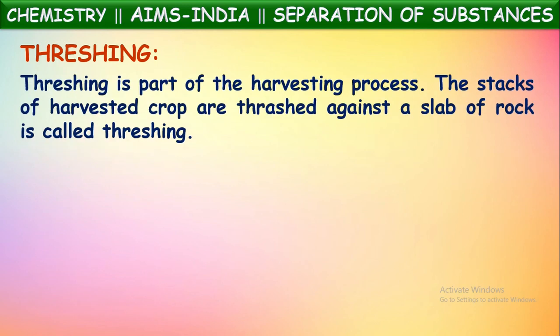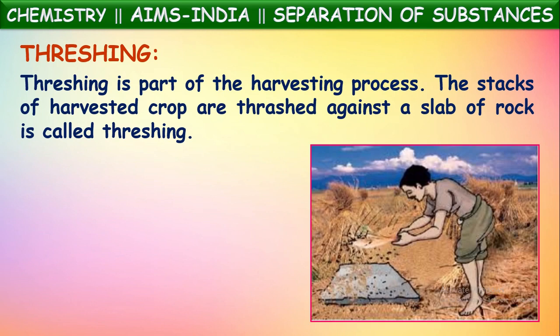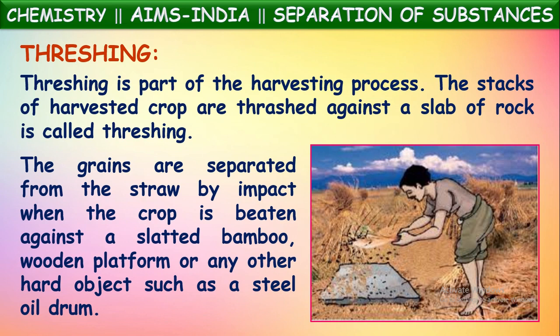The next method is threshing. Threshing is part of the harvesting process and is one of the techniques followed by farmers. The stacks of harvested crop are threshed against a slab of rock. After cutting the crop, farmers beat it against a hard slab or rock, and the grains attached to it get separated. The grains are separated from the straw by impact when the crop is beaten against a slatted bamboo, wooden platform, or a hard object such as a steel drum. This process is called threshing.